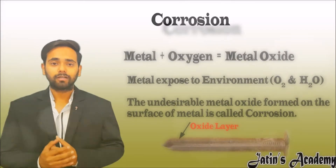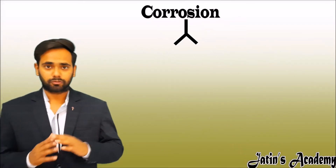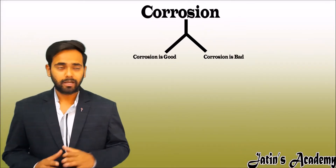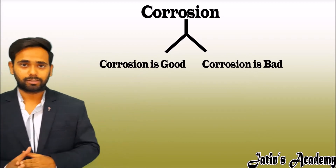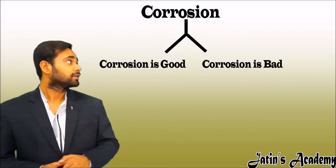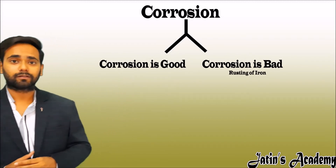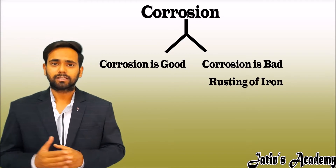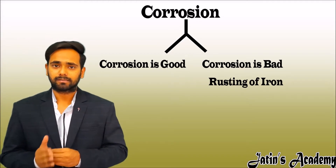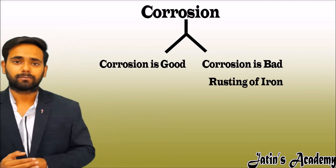Now let us understand in which metal corrosion is good and in which metal corrosion is bad. Taking the example of rusting of iron — rusting of iron is nothing but corrosion of an iron piece.